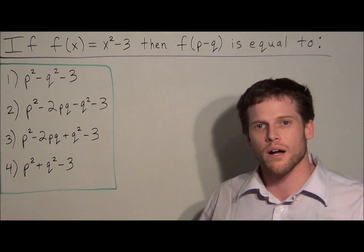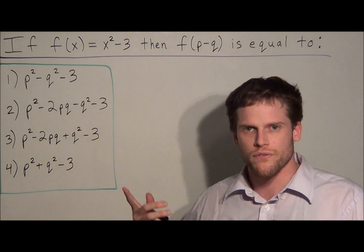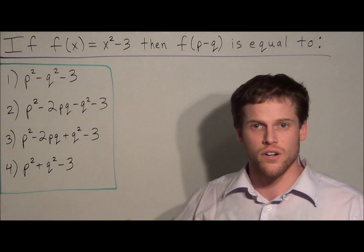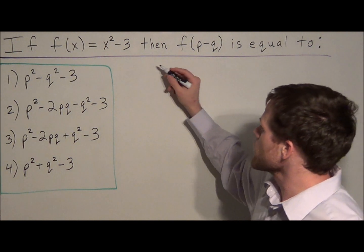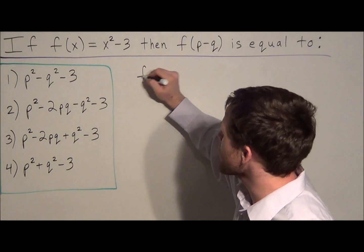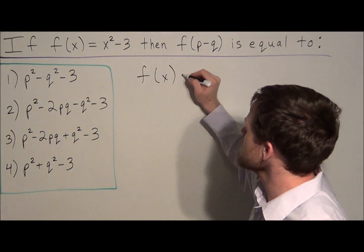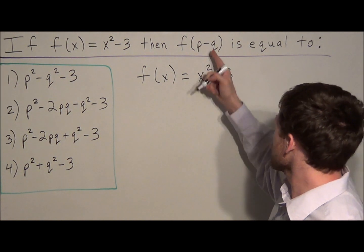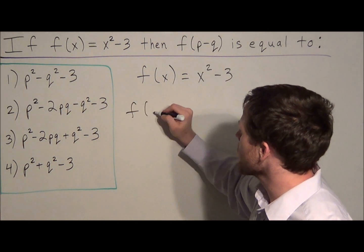Now what makes this problem a little bit more difficult than the usual function problem is that we're going to be plugging in a variable into the function. So the first thing we should do is, when we write down the function f of x is equal to x squared minus 3, to find out what f of p minus q is...